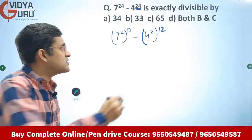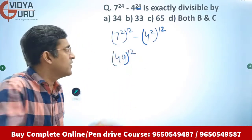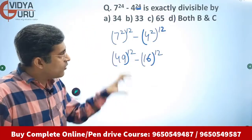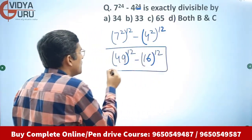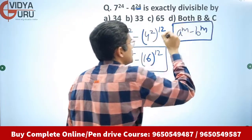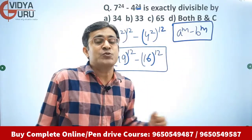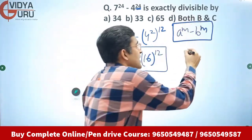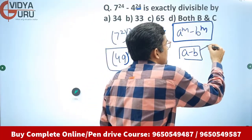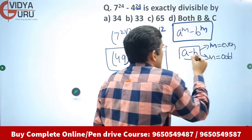7 squared is 49, so I write 49 raised to power 12. 4 squared is 16, so minus 16 raised to power 12. This expression is of the form a raised to power m minus b raised to power m. Now here is something really interesting: a raised to power m minus b raised to power m is completely divisible by a minus b — it does not matter whether m is even or odd.